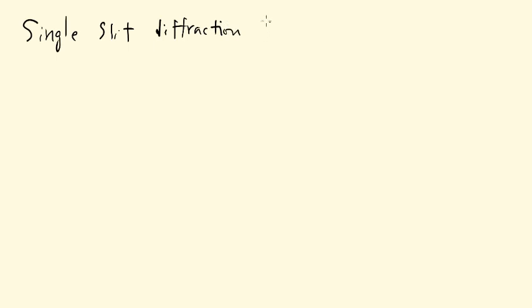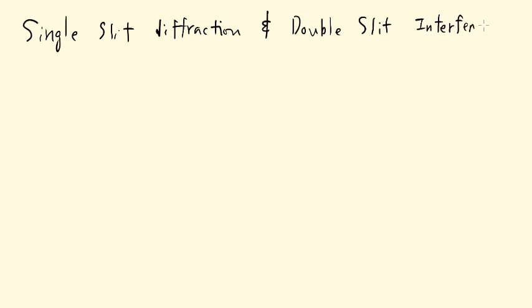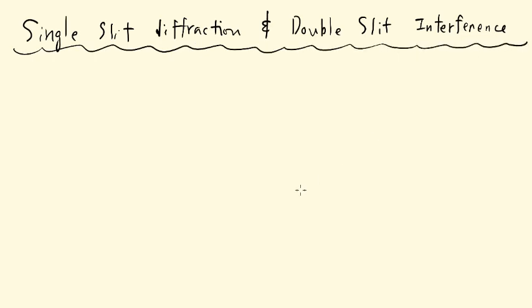Single slit diffraction, and in the case of double slit we call it double slit interference. But by now you've probably learned that interference and diffraction basically are saying similar things.